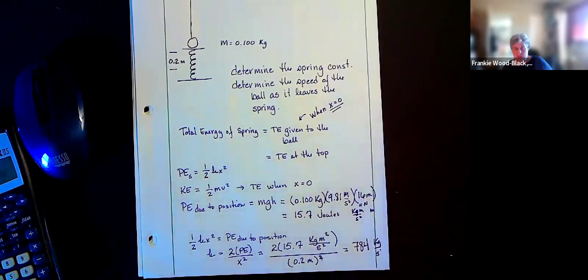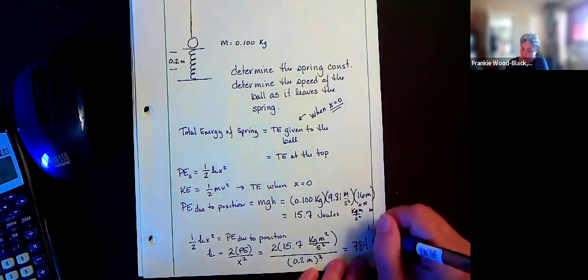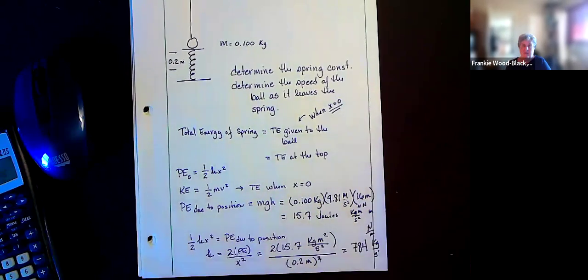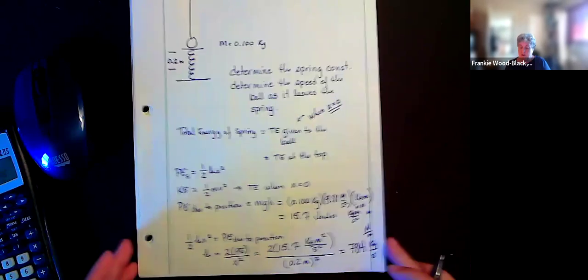Or you could, there's a couple of other things that you could have it. It could be Newton meters. That's another common one. And we could play with those, but that gives us our spring constant.